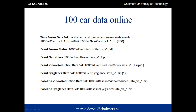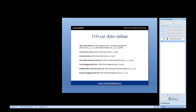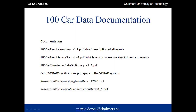If you try to download the 100 Car data from the Virginia Tech website, you will find different data types organized in different files with different formats. With the Safer 100 Car Toolkit, you do not need to worry about this. Nevertheless, you still need to download the documentation which describes the data types and annotations from the 100 Car Study.